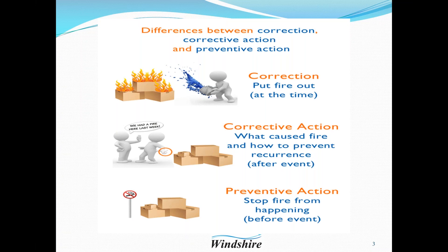Through that middle conversation those two employees had, they identified things that were faulty in the second picture and found a root cause — their 'smoking gun.' So they put up a no smoking sign to stop the fire from happening again. This preventive action can occur before or after an event. Importantly, preventive action doesn't have to be associated with something that went wrong — it can be a very proactive approach to prevent things from going wrong in the first place.